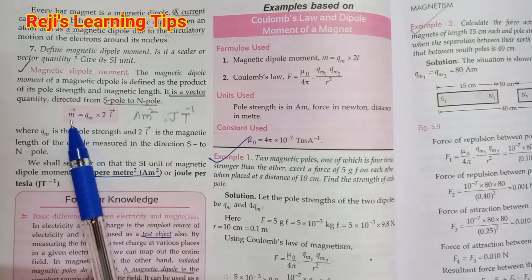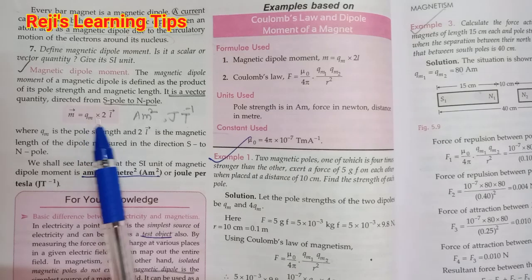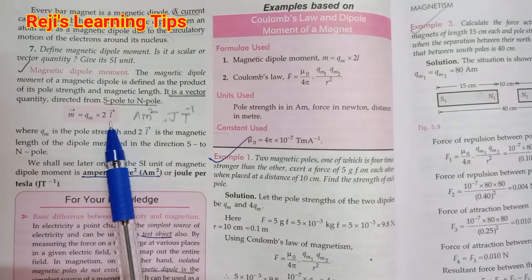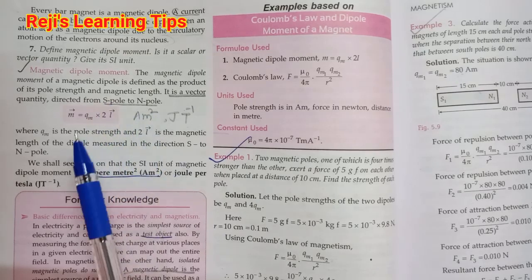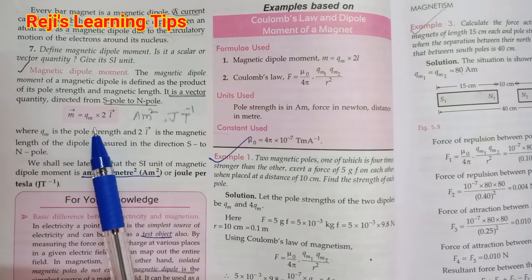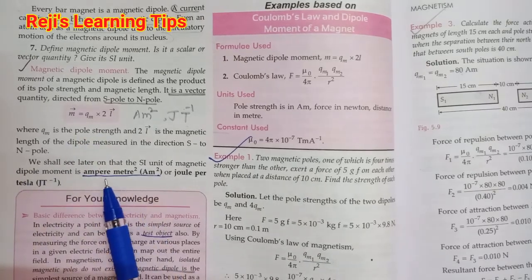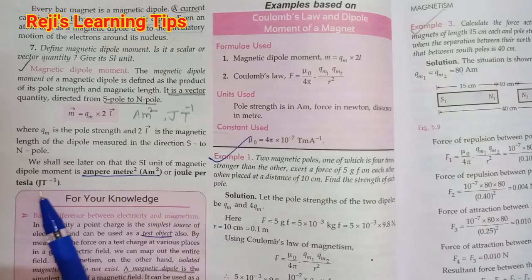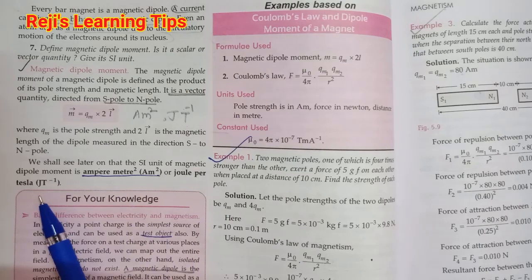Magnetic dipole moment M equals the product of pole strength QM and magnetic length 2L. It is a vector quantity directed from south pole to north pole. Its unit is ampere meter square or joule per tesla.